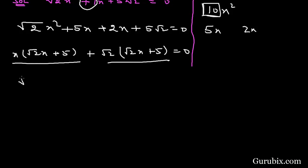From these two terms we shall take common √2x + 5, and therefore in the second bracket it remains x + √2. So (√2x + 5)(x + √2) = 0, which means √2x + 5 = 0 or x + √2 = 0.